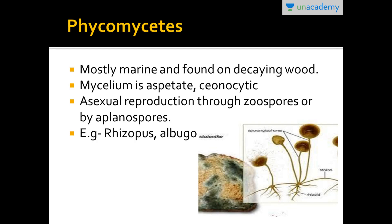Phycomycetes are the lower fungi. They are mostly found in marine environments or on decaying wood, and their mycelium is aseptate. They reproduce through zoospores or aplanospores. Here is a diagram of Rhizopus, which is a bread mold. The brown fruiting bodies contain spores, and when they burst, spores reach a new location and grow into new Rhizopus.